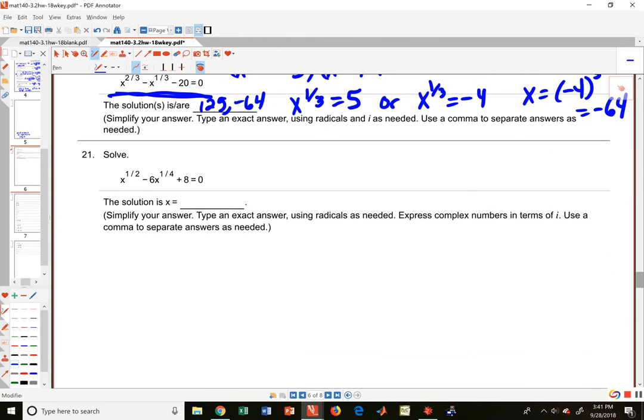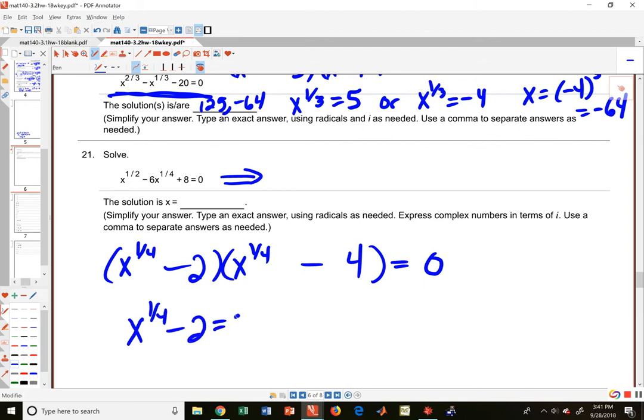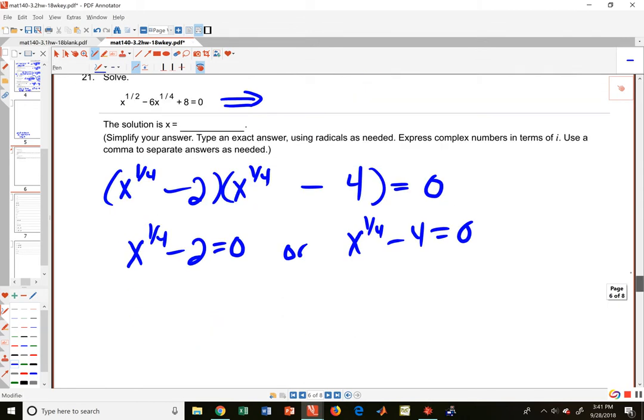Let's do one more here, and you can get imaginary solutions, so be careful about those. Let's do this one right here. So we're going to factor this. Now it's not obvious at first, but we're going to go x to the one-fourth and x to the one-fourth. And the eight—well, we got four and two that are factors that add up to six, so we make both of these negative. That'll do the trick.